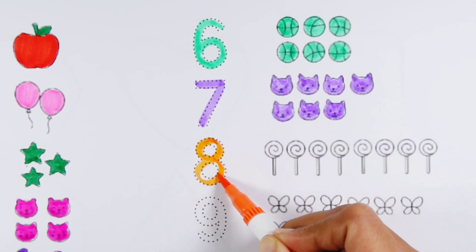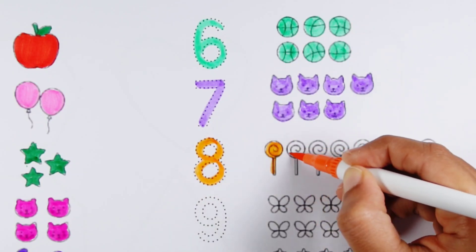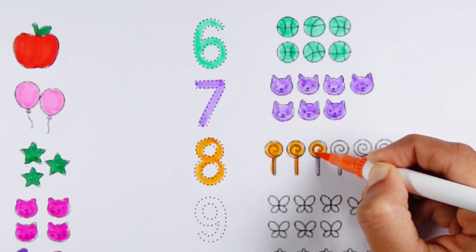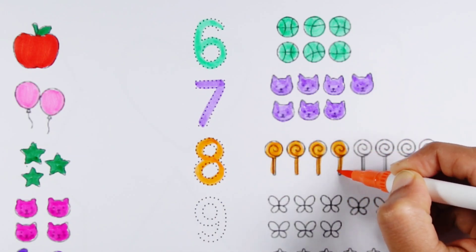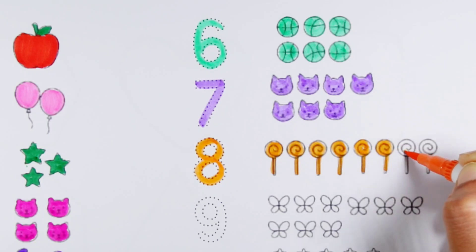Number eight. One, two, three, four, five, six, seven, eight. Eight lollipops.